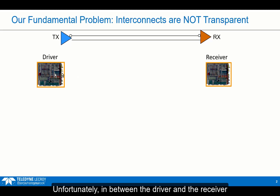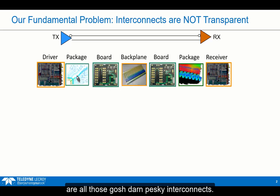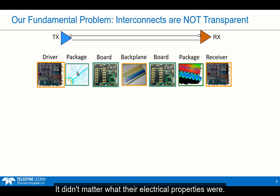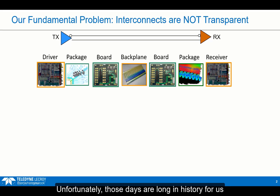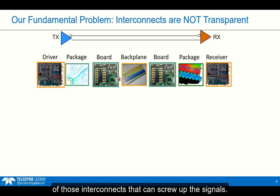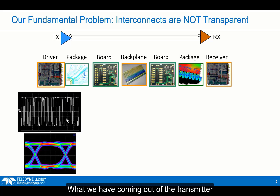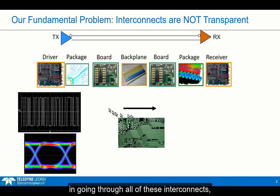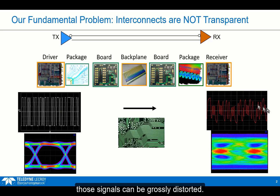Unfortunately, in between the driver and the receiver are all those pesky interconnects. In the good old days, those interconnects were transparent — it didn't matter what their electrical properties were; what was important was the connectivity. Unfortunately, those days are long in history for us, because now it's the electrical properties of those interconnects that can screw up the signals. What we have coming out of the transmitter might be beautiful, pristine signals, but in going through all of these interconnects, by the time they get to the receiver, those signals can be grossly distorted.